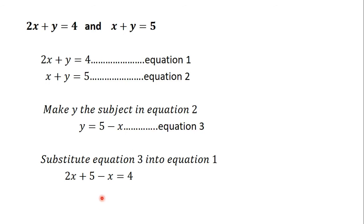From here, we have a linear equation so we can solve it. In solving this linear equation, we group items and simplify. So we are going to have 2x minus x is equal to 4 minus 5. From here, we can see that x is equal to minus 1. So we have been able to solve for x.